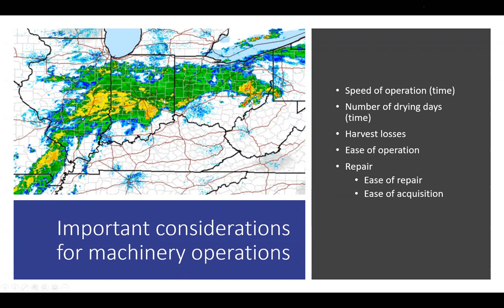Here's what typically happens when you cut hay — you get a storm bearing down on you. Important considerations for hay machine operations include the speed of operation: how quickly can you get the hay down, dried, and back into the barn? Also, the number of drying days — that's at least three or four days in a row where it's not raining — and being able to bale within that window.